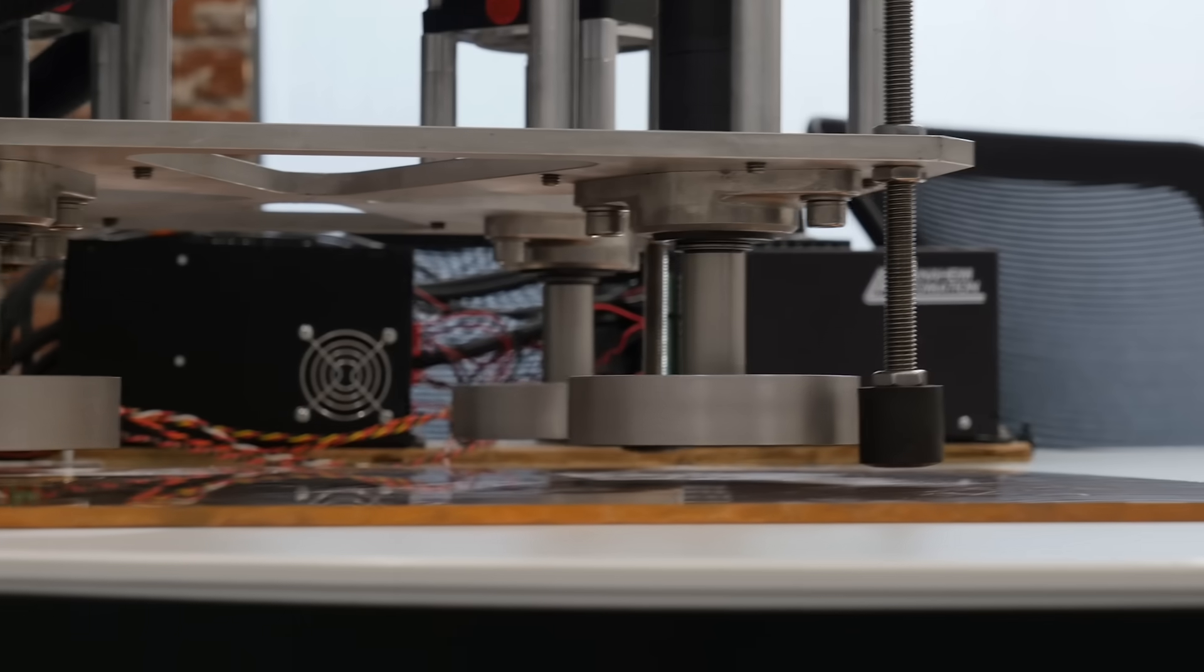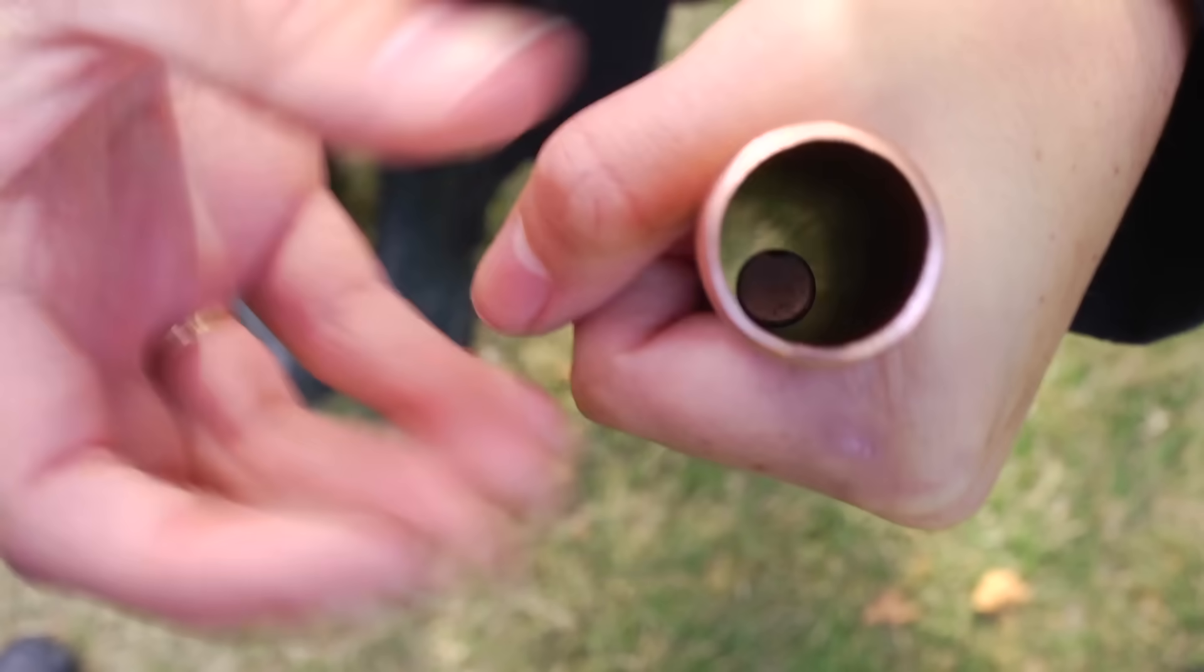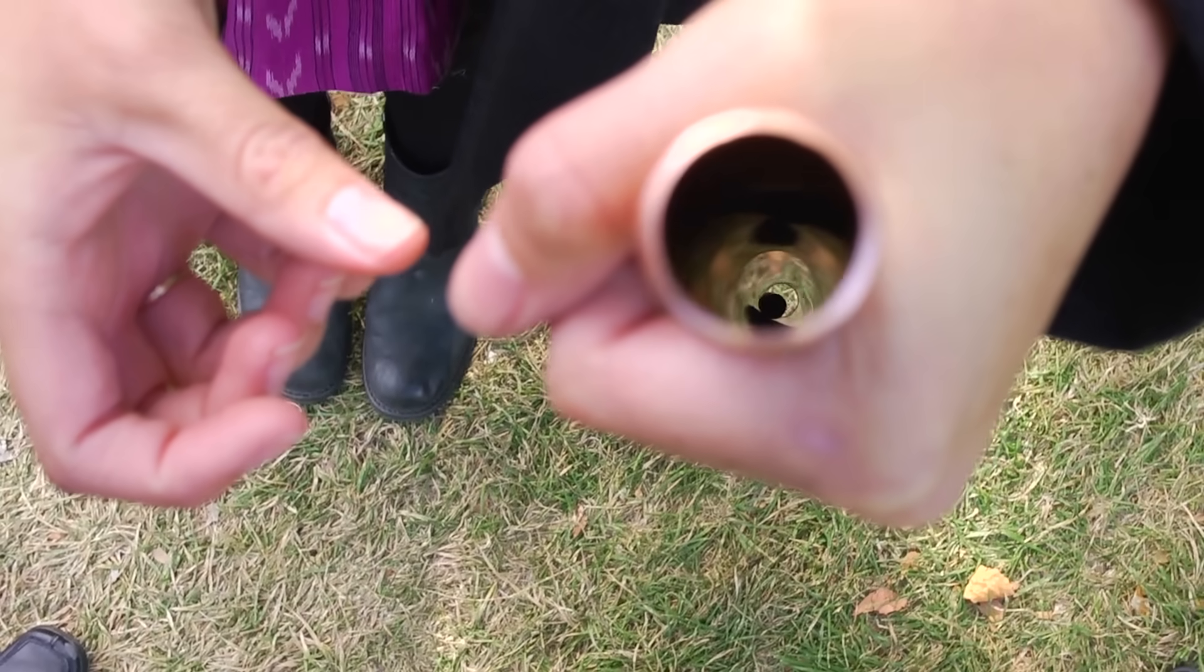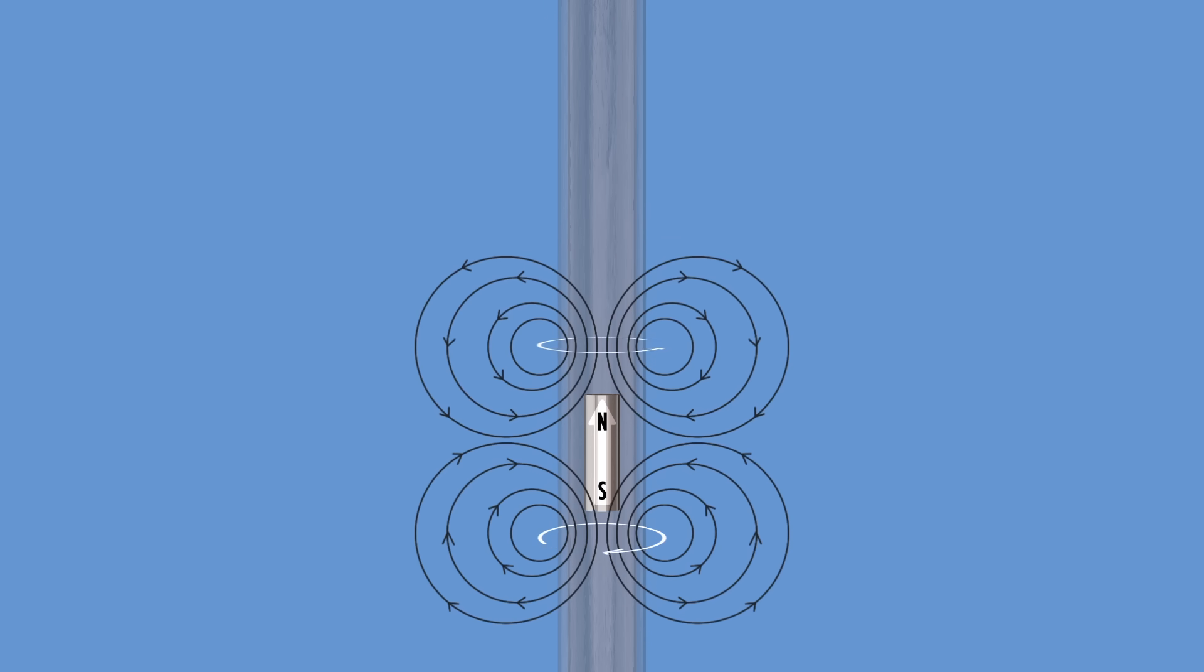So, how does it work? Well, it's similar to how a magnet falling through a pipe is slowed down. Anytime a conductor experiences a changing magnetic field, electric currents are induced in it, which create a magnetic field to oppose that change.